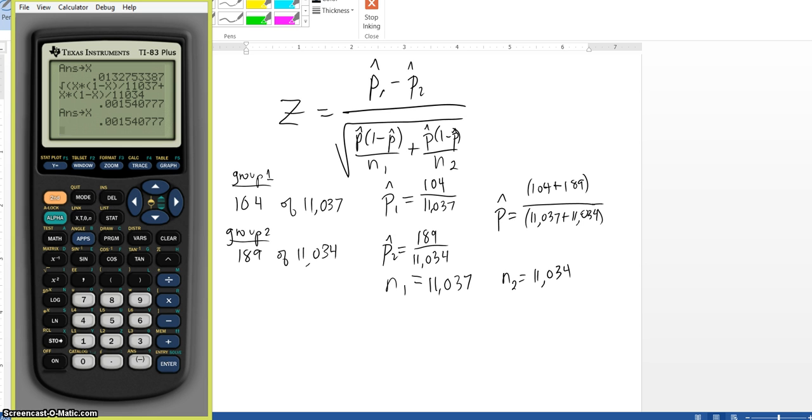So now to get my test statistic, I need to take my P1 hat minus my P2 hat and then divide it by that X.